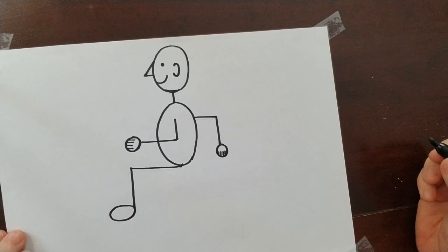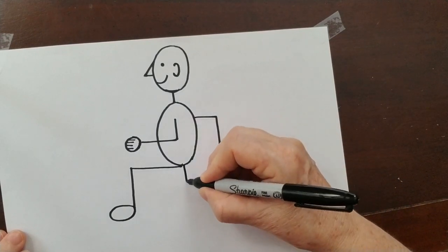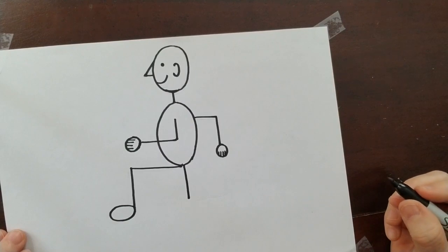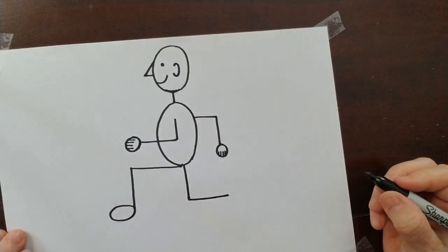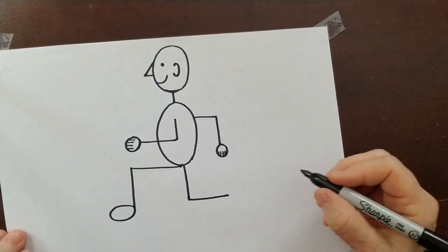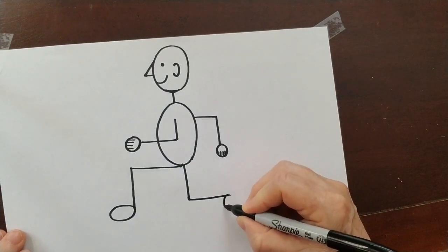Let's do the other leg. Vertical and horizontal. Let's draw the other foot. It's an oval.